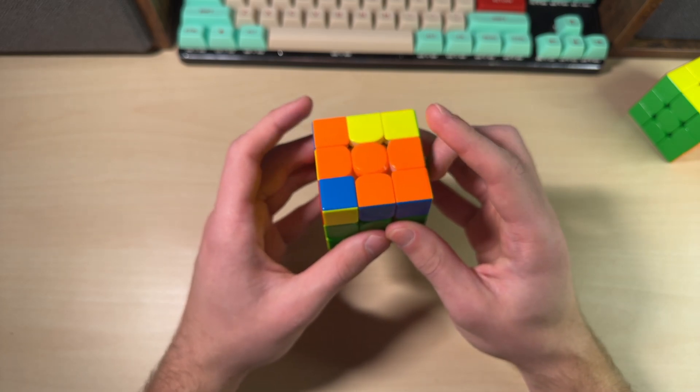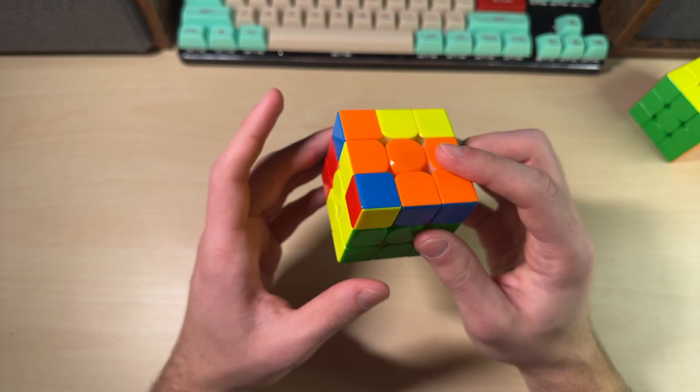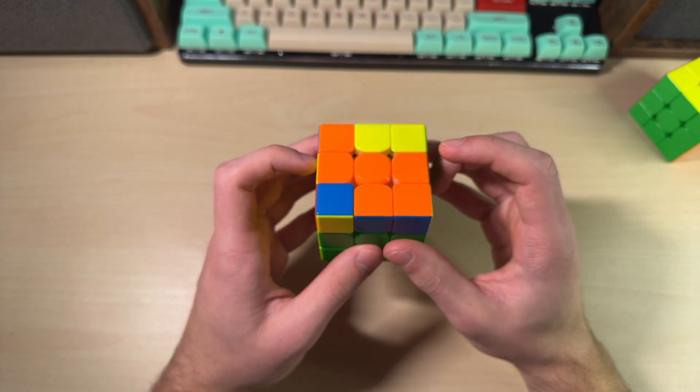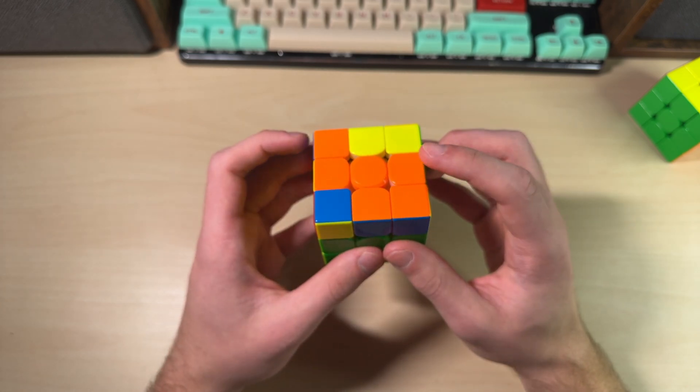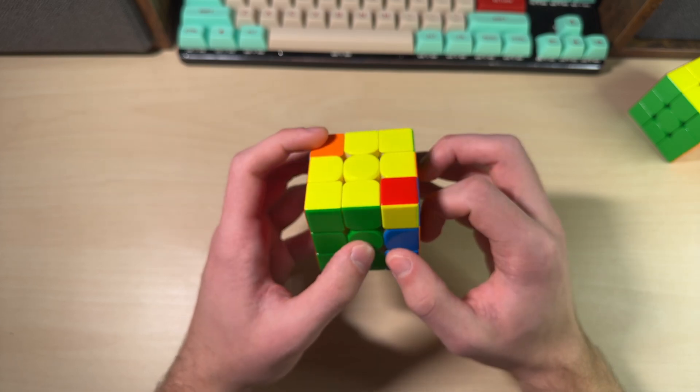So do it like that. And then this sets up either your right or your left index finger to the next F, the wide F move. So I generally do it with my right index finger like this.